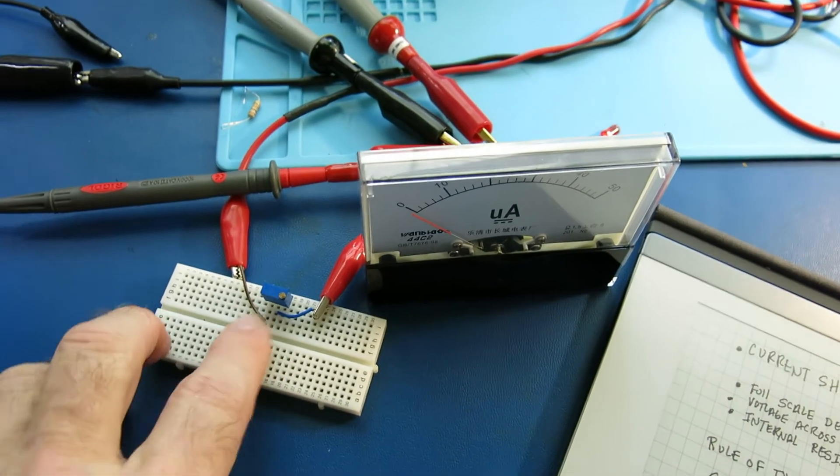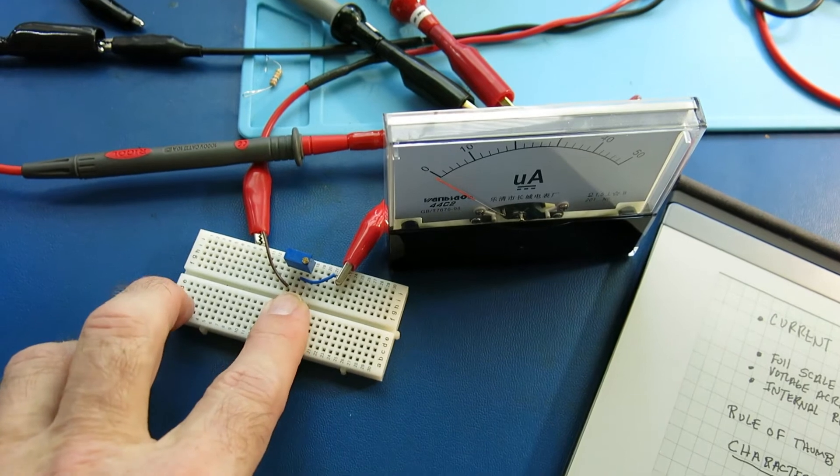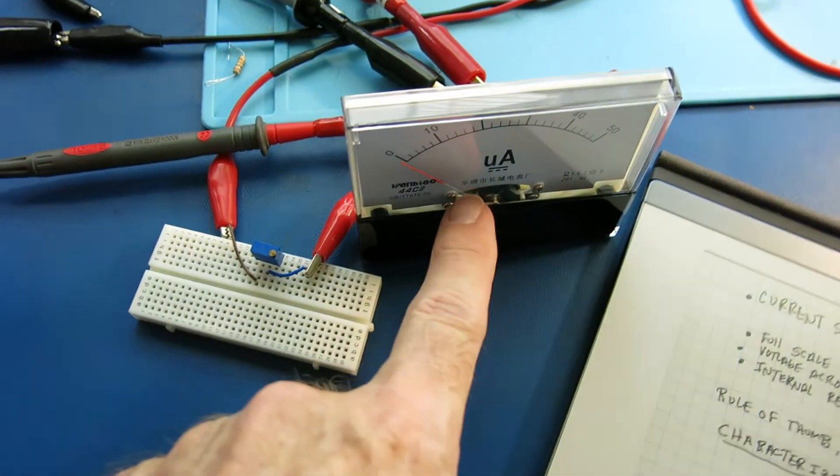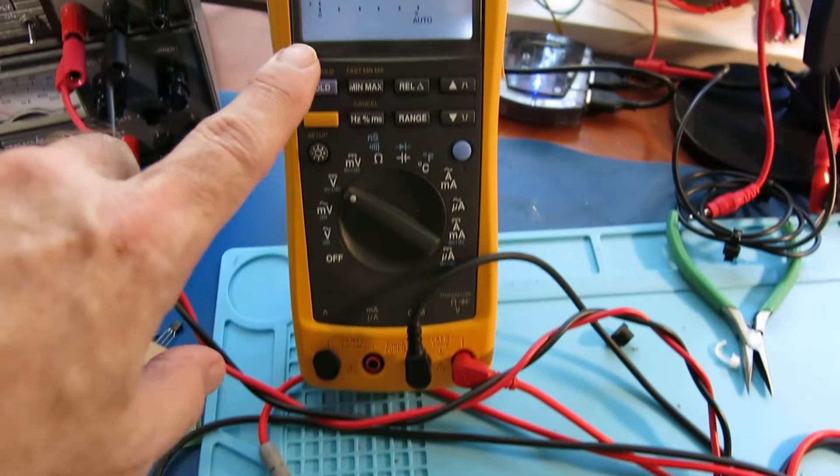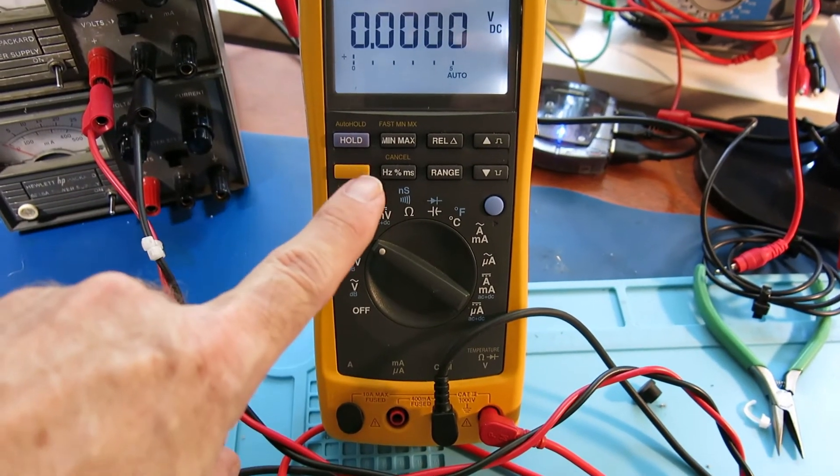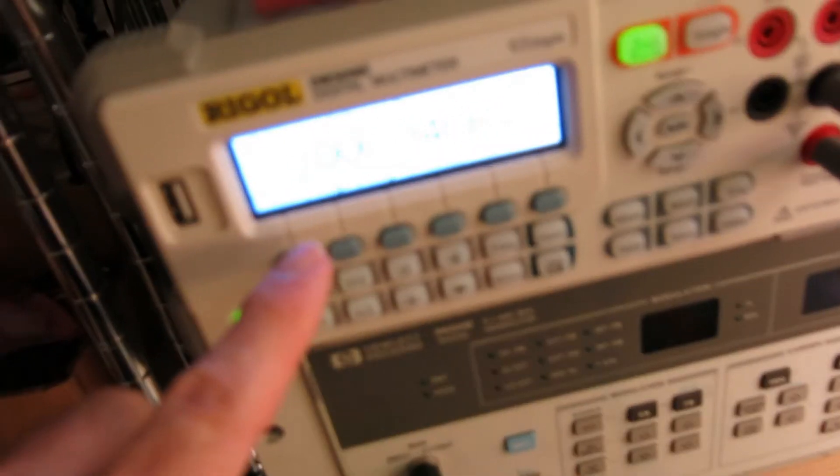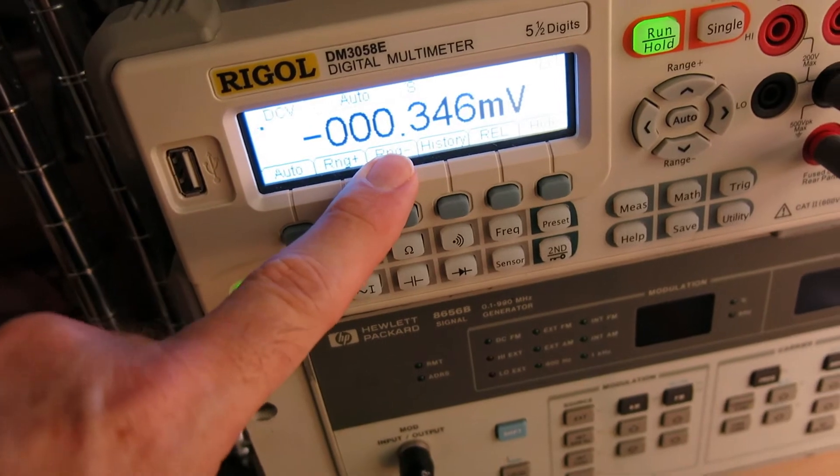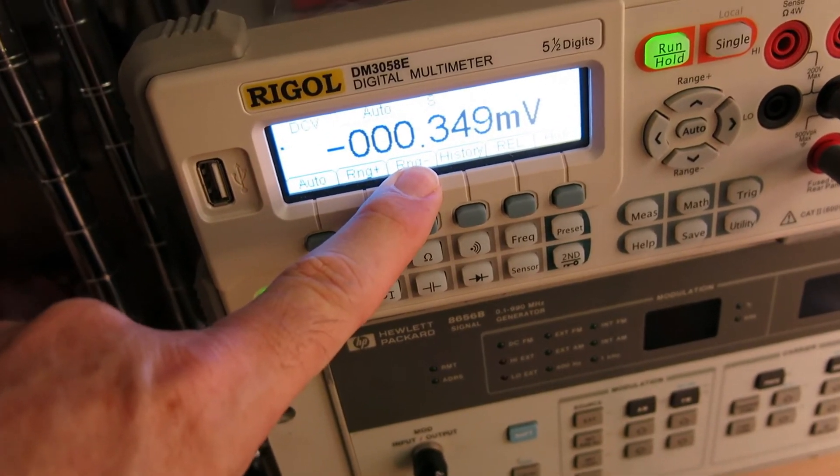Here's the connections. There's your variable resistor to adjust for full-scale deflection. I've got two digital multimeters, one to measure the voltage across the analog display, one to measure the actual current at full-scale deflection.